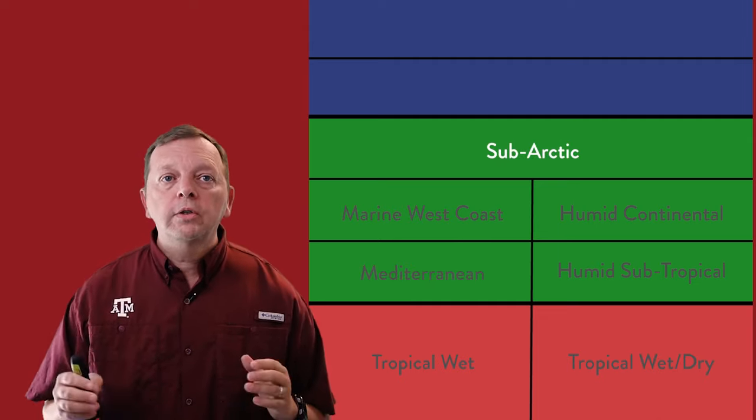On our graphic organizer, we can easily divide these nine climates by latitude. But there are three climates that can exist at any latitude: the arid, semi-arid, and highland climates. The word arid literally means dry — and that's exactly what arid and semi-arid climates are.